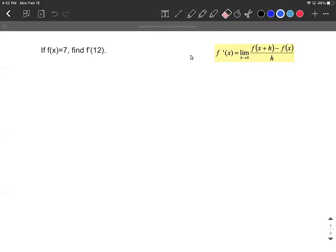On this problem, we have a function f of x equals 7, and we are asked to find the derivative at 12.